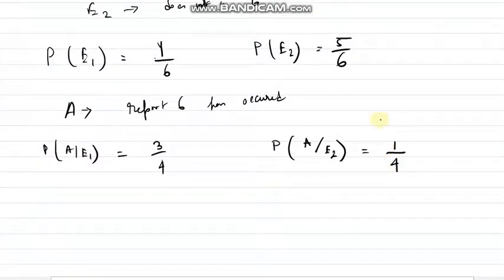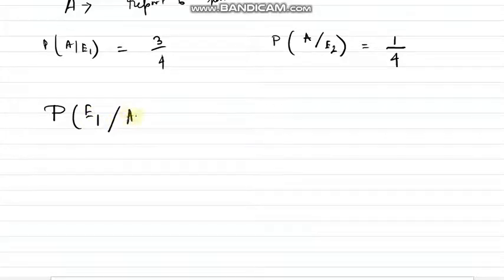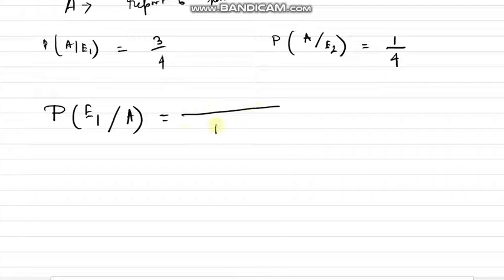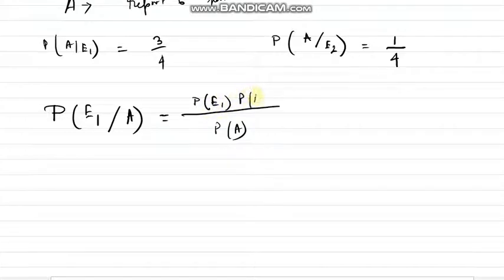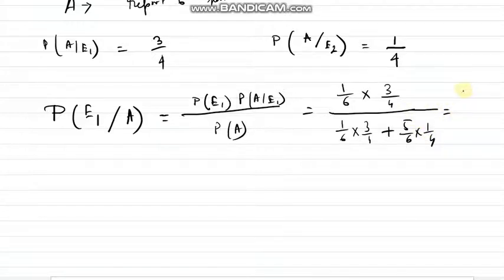So that will be 1 minus 3/4, which is 1 divided by 4. Now what we need to find out is P(E1|A) — that it is actually a 6 given his report. By Bayes' theorem, P(E1|A) equals P(E1) × P(A|E1) divided by P(A). That is (1/6 × 3/4) divided by (1/6 × 3/4 + 5/6 × 1/4), and the answer is 3 divided by 8.